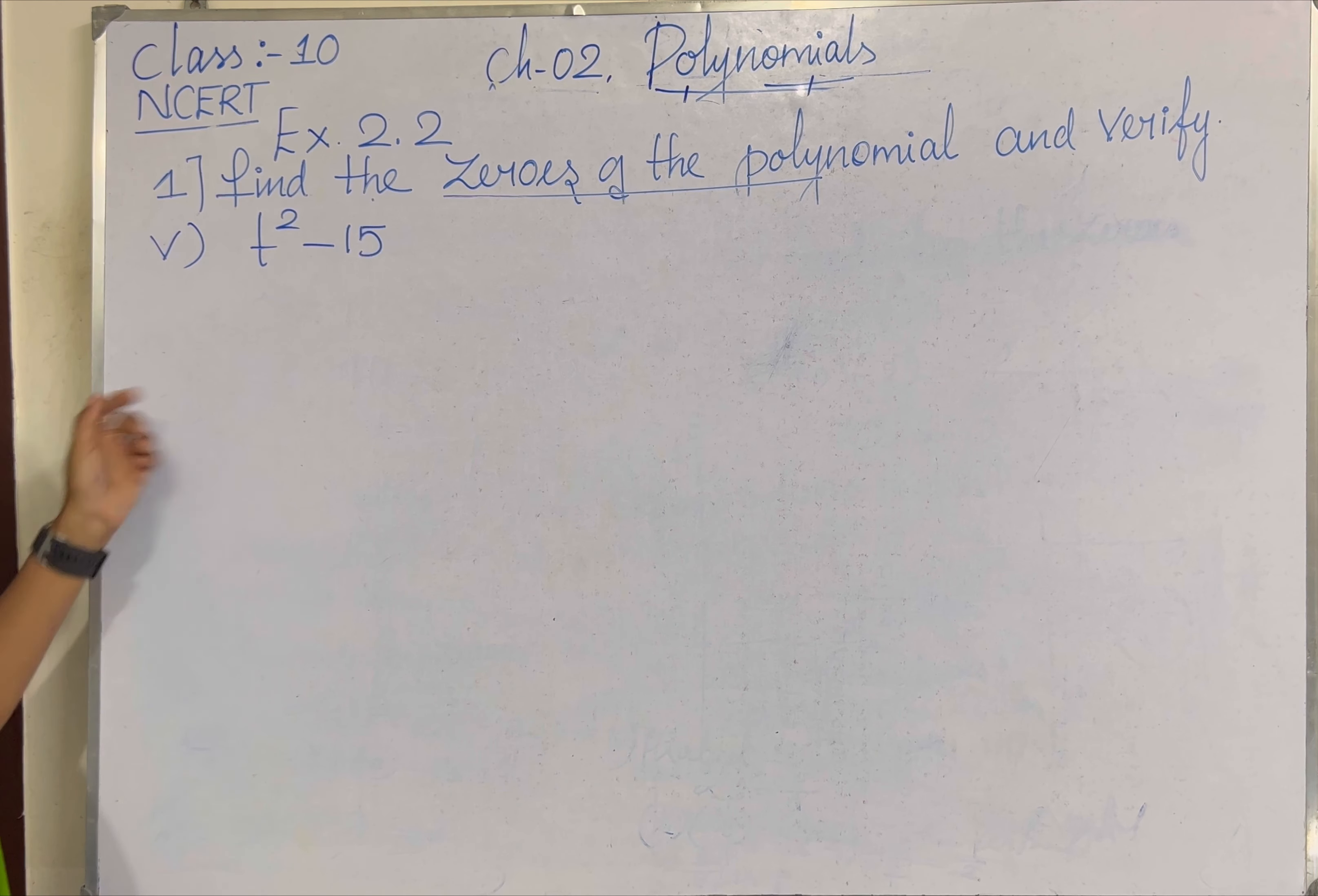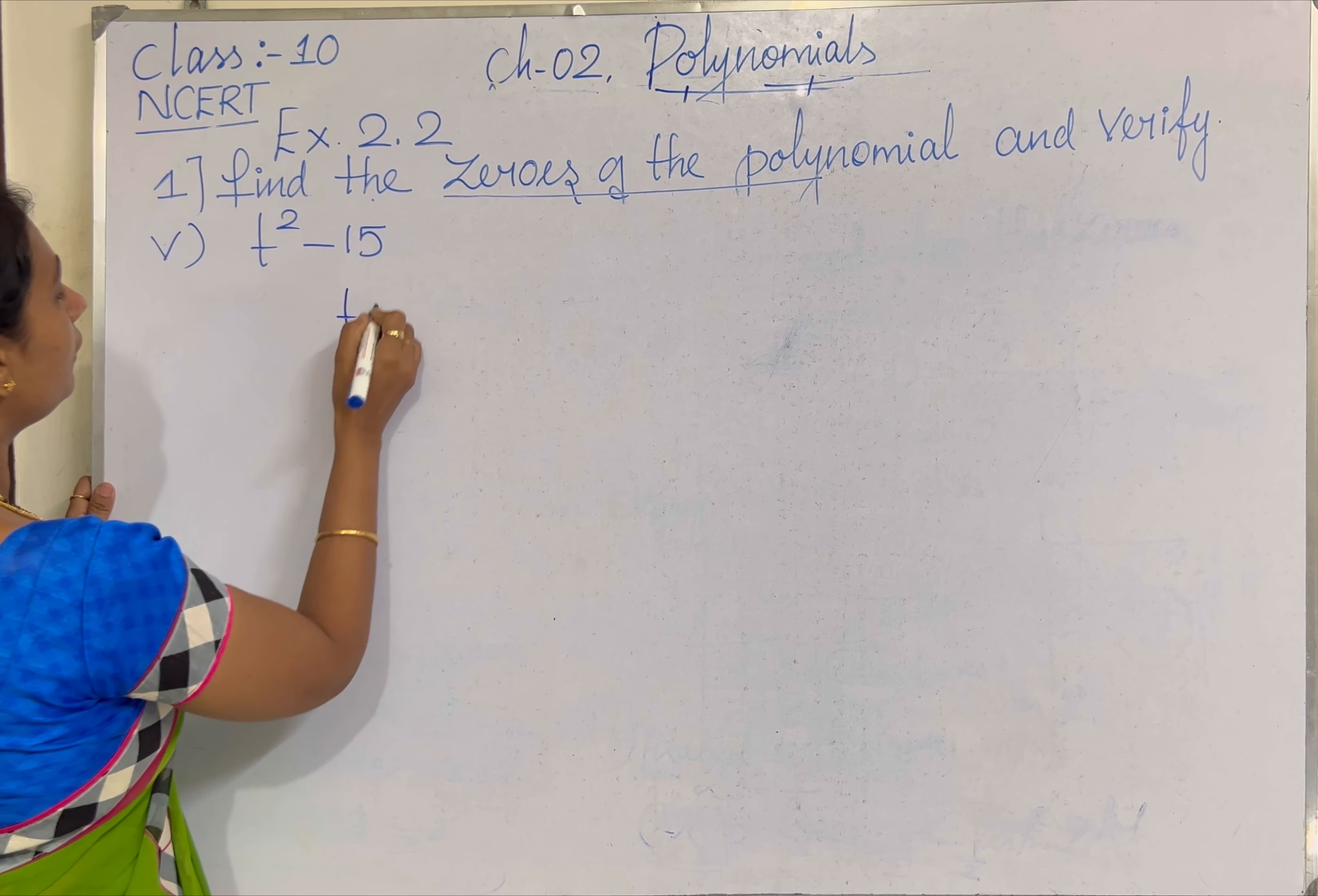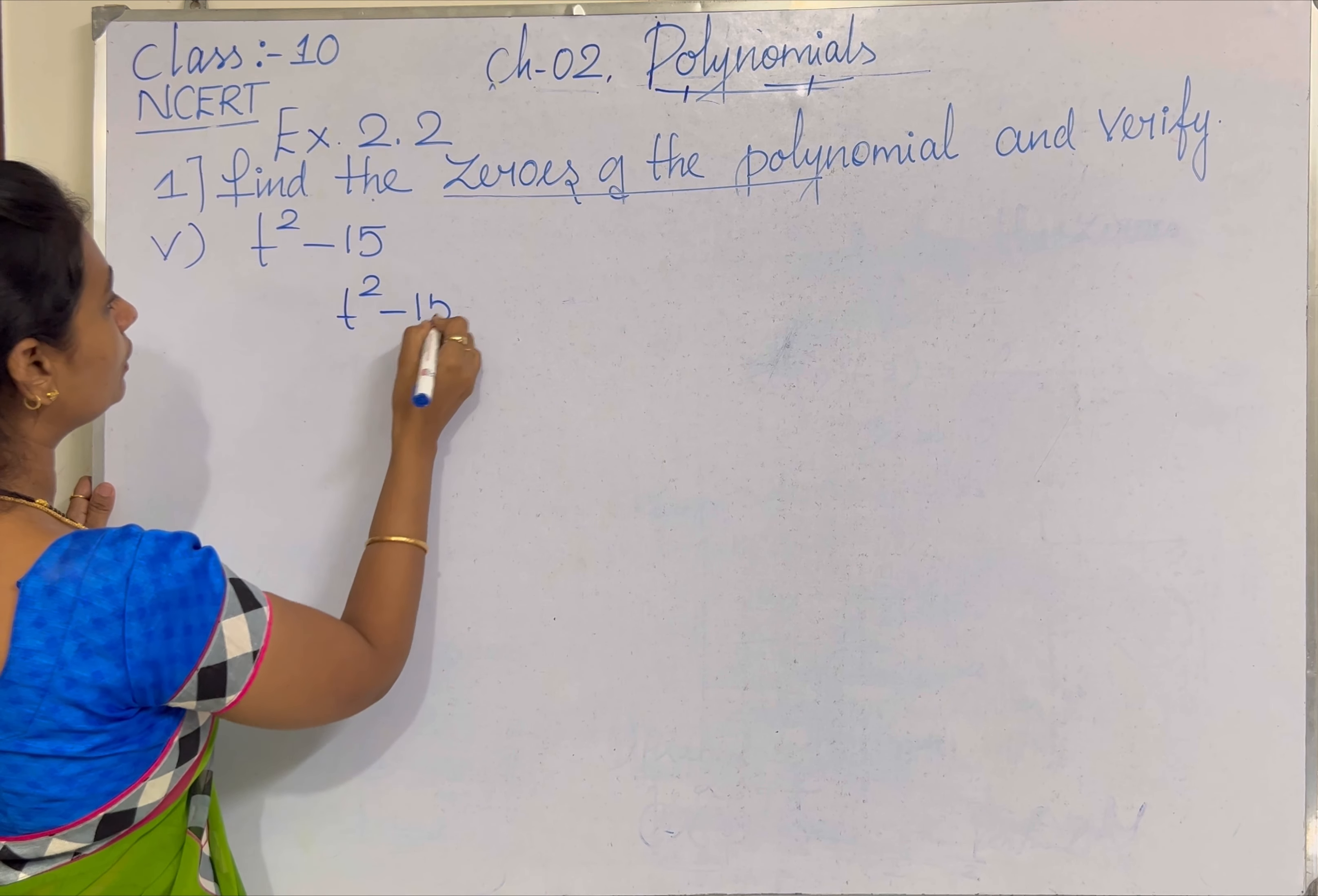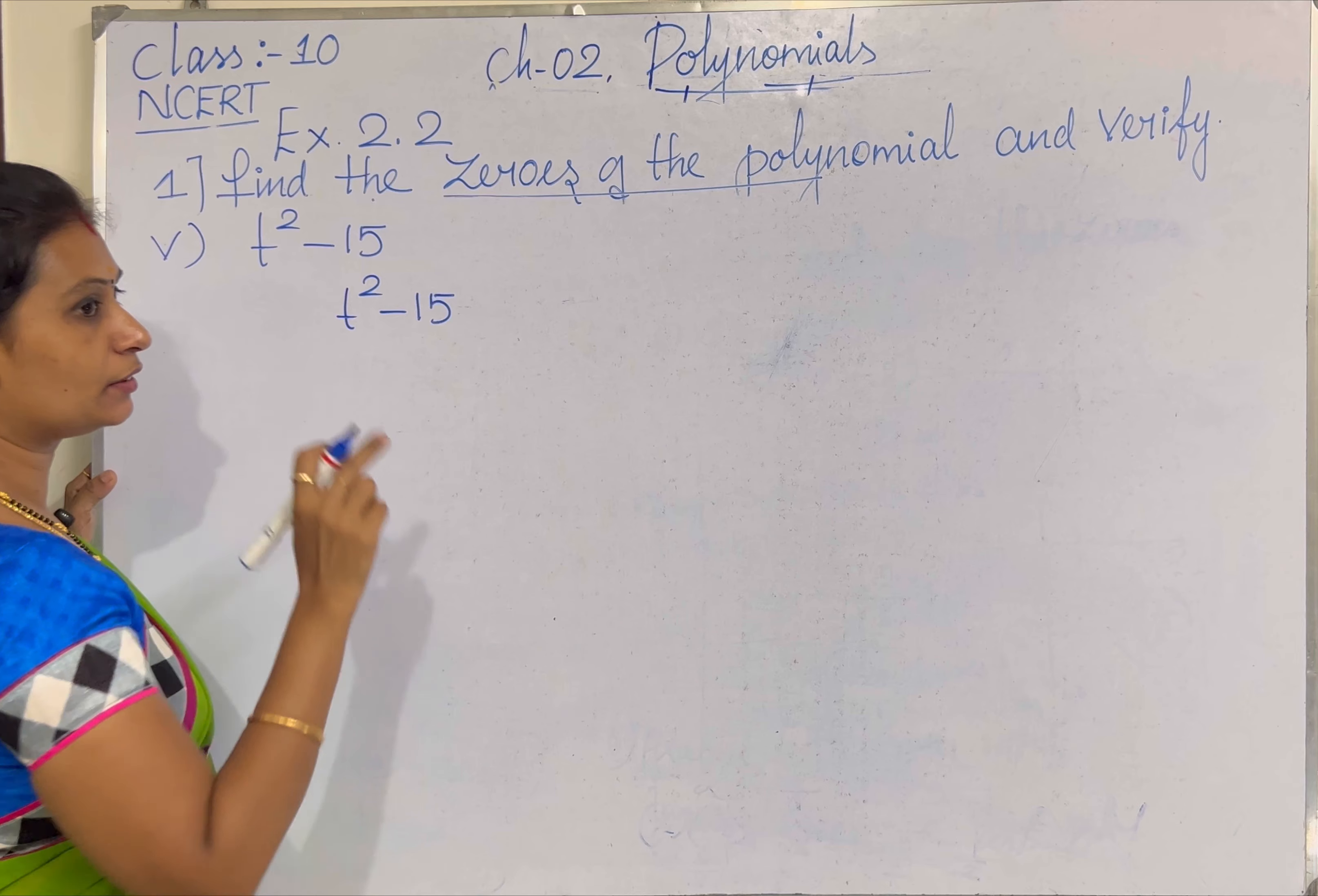For the given quadratic polynomial, we need to find out the zeros of the polynomial. The given quadratic polynomial, T²-15. Here we have only two terms and the constant term.